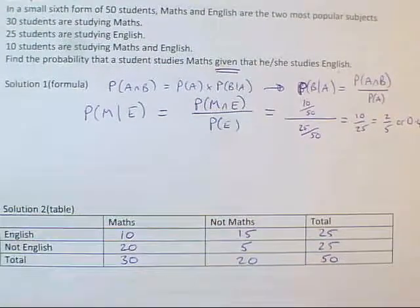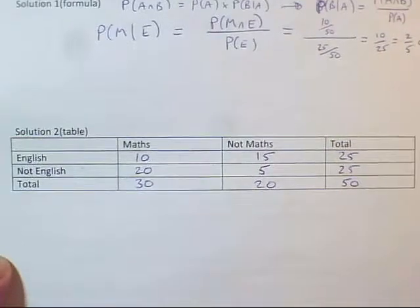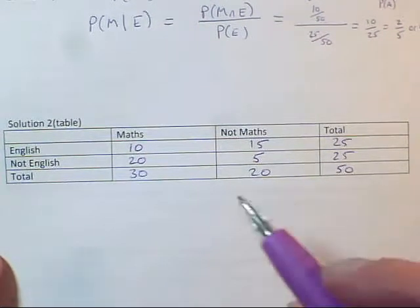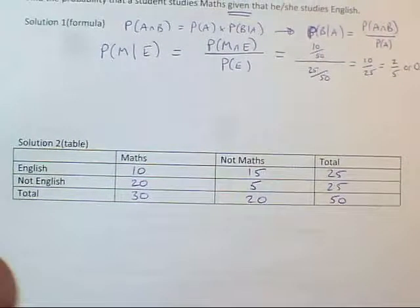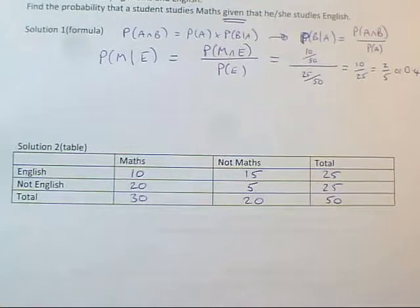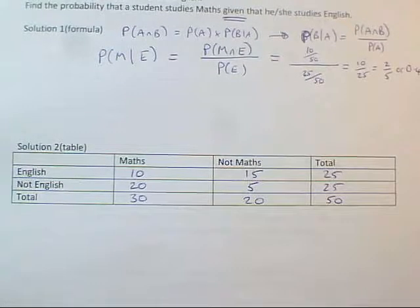But it's equally okay to work with the table. And if you've already got a table set up, what I would do is say, think back to what we were asked to do. We need the probability they study maths, given that it's an English student.